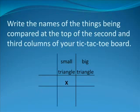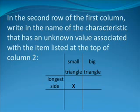Next, write the names of the things being compared at the top of the second and third columns of your tic-tac-toe board. The second column name should be the name of the object that has an unknown value associated with it, and the third column should be the name of the object for which you were given values for both characteristics. Your tic-tac-toe board should now look like this. In the second row of the first column, write in the name of the characteristic that has an unknown value associated with the item listed at the top of column 2. This leads to the following.